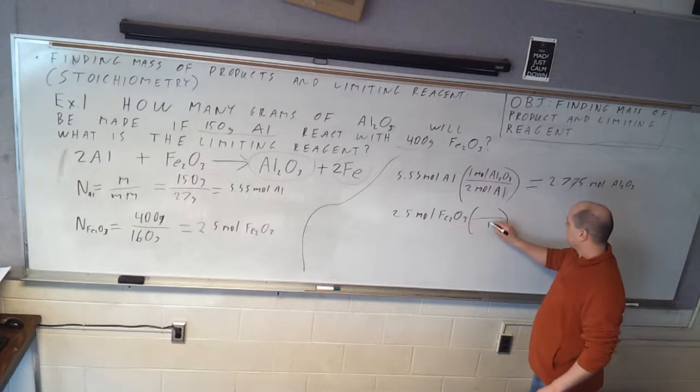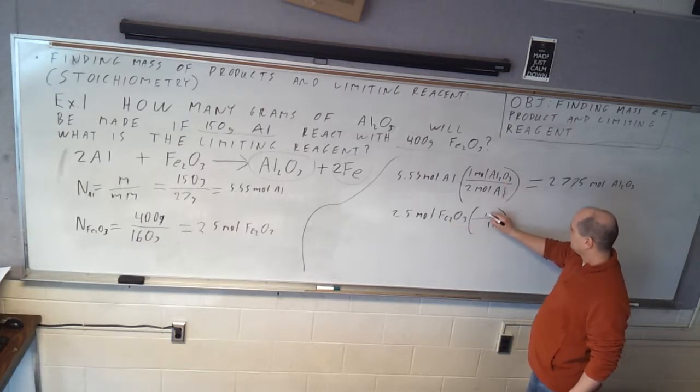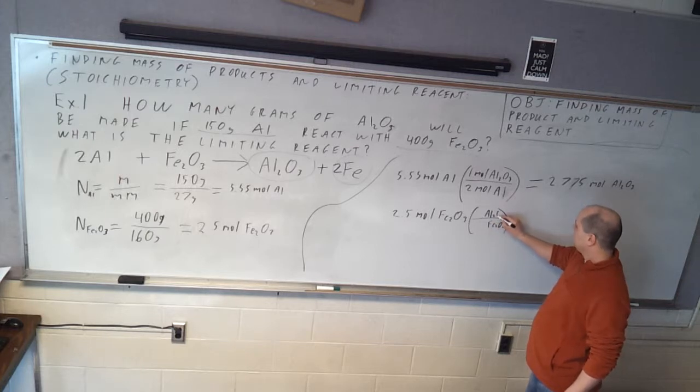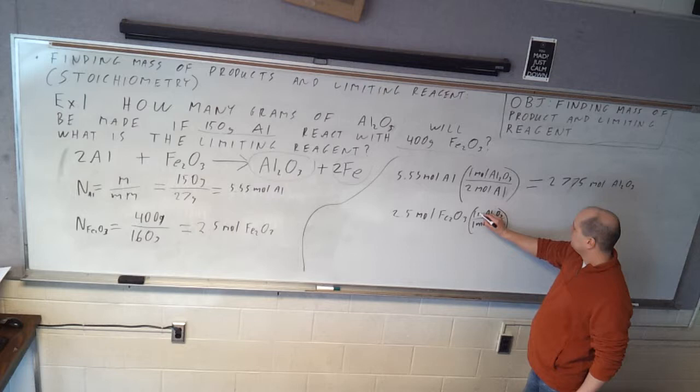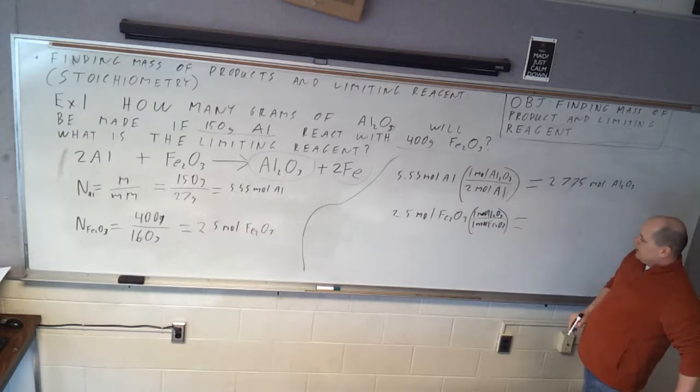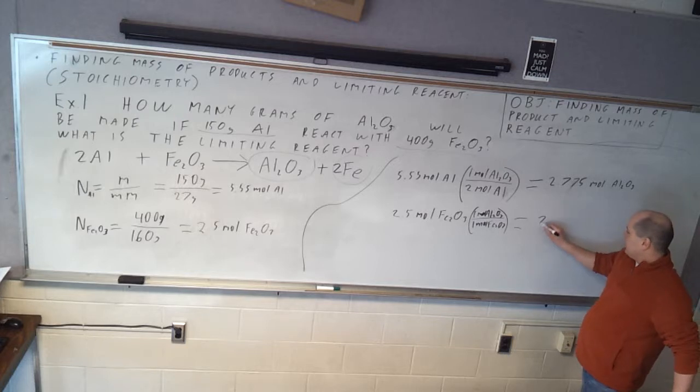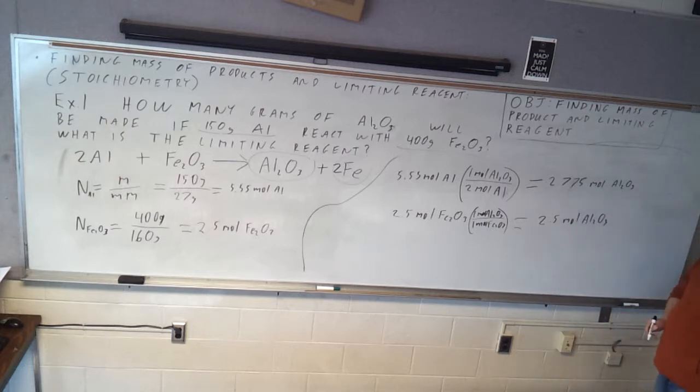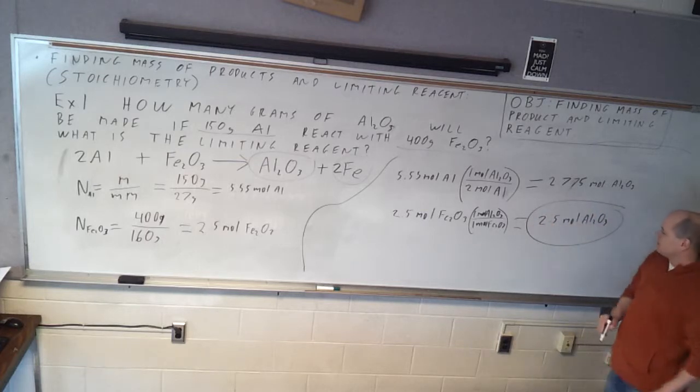So we're going to do 2.5 moles of Fe2O3, and then this goes at the bottom, Fe2O3. And then again, aluminum oxide is what we're looking for, so we put that on top. And it's going to be 1 mole and 1 mole, because there's no numbers in front of the balanced equation. So that's just going to come out to 2.5 moles Al2O3. So how much are we going to make? 2.5. The lesser number is the amount we're going to make.